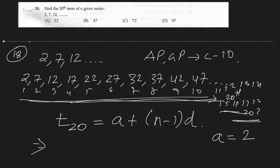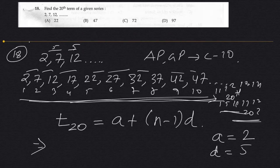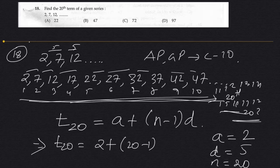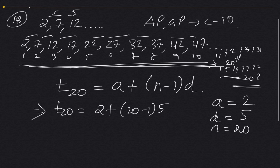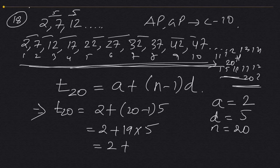And 'd' is the common difference between terms, which is 5. Then 'n' is the number of terms — meaning it is the 20th term. So T20 equals 2 plus (20 minus 1) times 5, which gives us 2 plus 19 into 5, equals 2 plus 95.